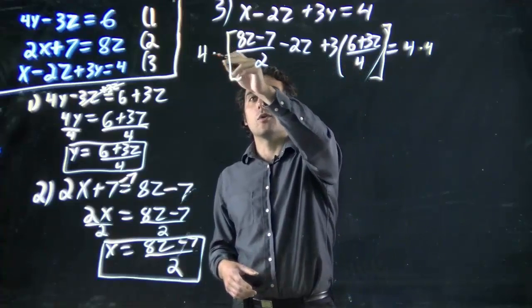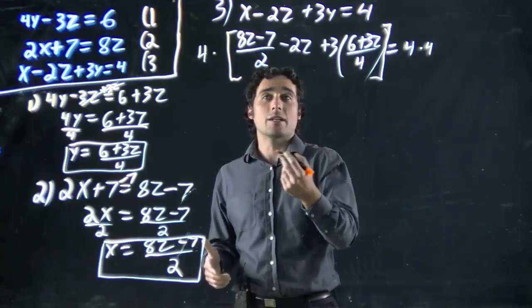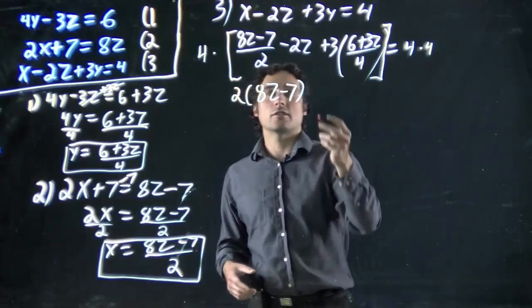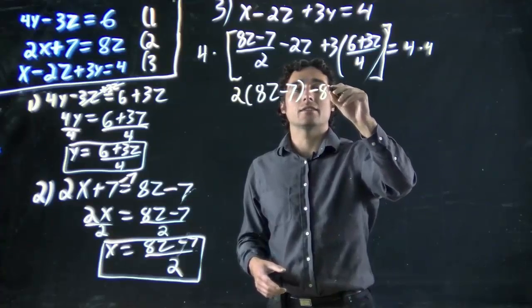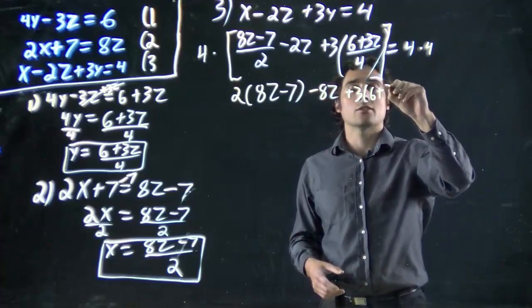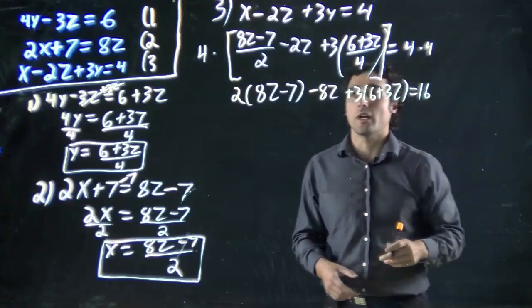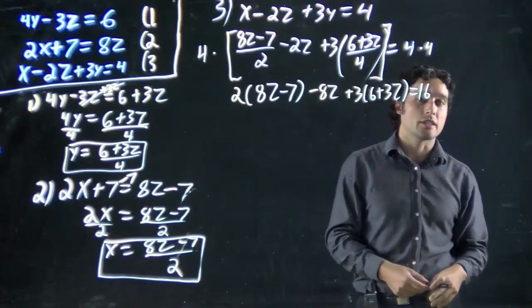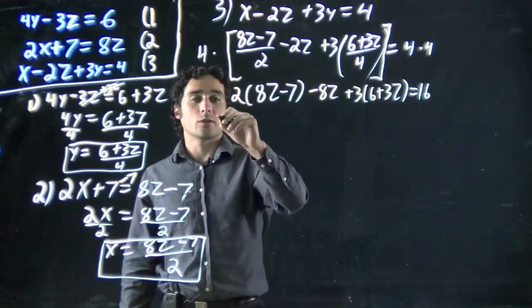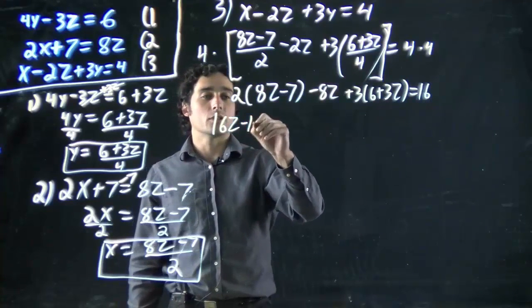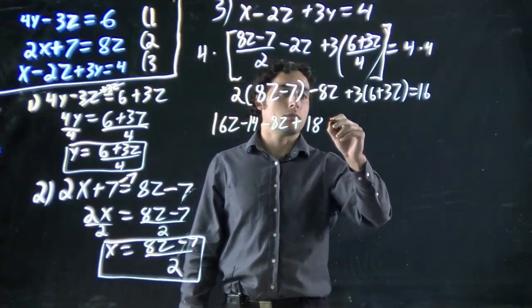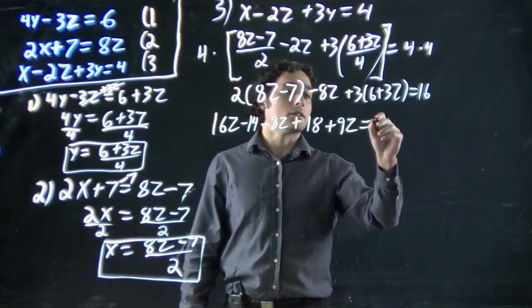Let's see what happens. 4 over 2 is the same as 2. 4 divided by 2 is 2. So we're going to get 2 times 8z minus 7 minus 2z times 4 or minus 8z. And then those 4s will cancel. So we're left with plus 3 times 6 plus 3z all equals 16.